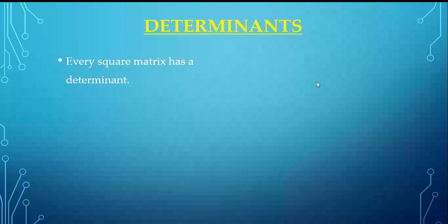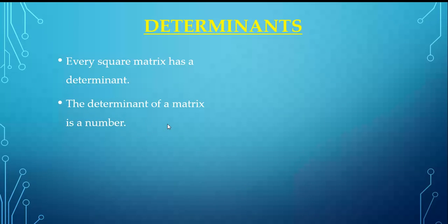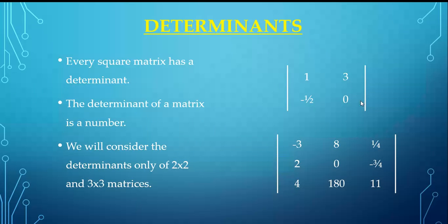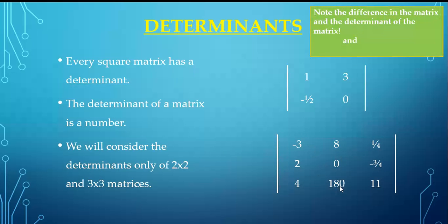Every square matrix has a determinant. A rectangular matrix cannot have a determinant — only square matrices can. When we solve a determinant, we get a scalar quantity — a single number. The notation difference is: a matrix uses square brackets, while a determinant uses straight lines (vertical bars). This applies to both 2×2 and 3×3 cases.